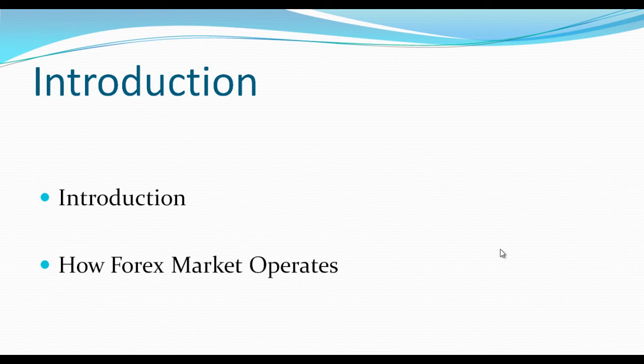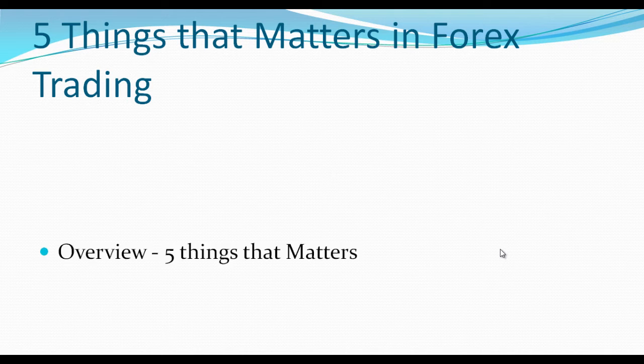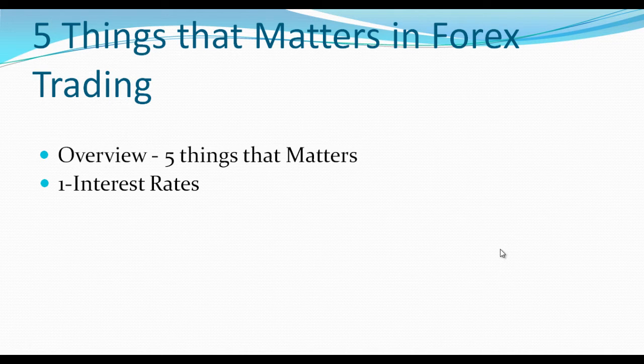Introduction: the first thing we discussed was how the forex market operates — what really goes on, how forex pairs move. Then the next most important topic is the five things that matter in forex trading: overview and interest rate. Interest rate is the most important factor, and if you know how big players do arbitrage, you will always be good at making money.